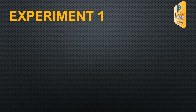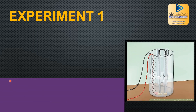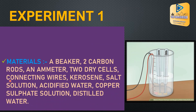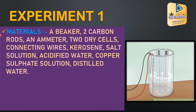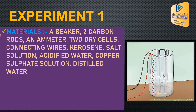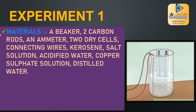We will now move to the first experiment regarding this lesson. You will need a beaker, two carbon rods, and an ammeter through dry cells, connecting wires, kerosene, soil solution, acidified water, copper sulphate solution, and distilled water.